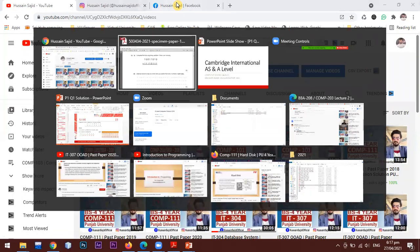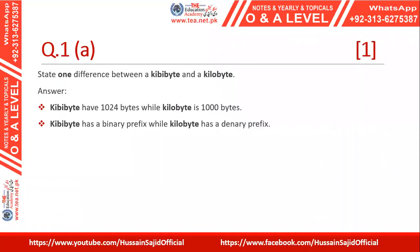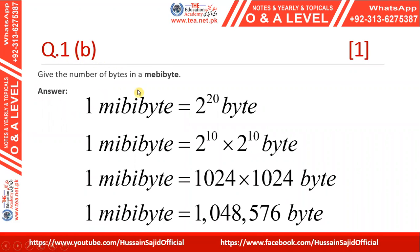Let's start question number one. It asks to state one difference between kibibyte and kilobyte. I've mentioned two differences — you can write either one. A kibibyte has 1024 bytes whereas a kilobyte has 1000 bytes. Also, a kibibyte has a binary prefix whereas a kilobyte has a decimal prefix — meaning 2 raised to the power 10 versus 10 raised to the power 3.